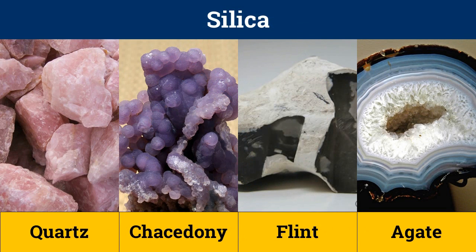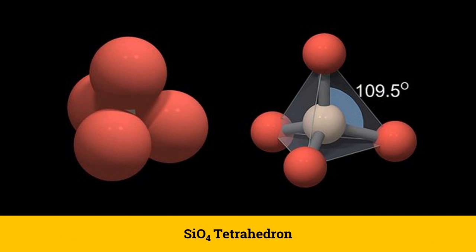Silicon does not occur in the free state, and silica or SiO2 is the only oxide of silicon which exists in nature. This silica can be found in the form of quartz, chalcedony, flint and agate, where quartz is the most common rock-forming mineral. All those large number of minerals containing silicon are known as silicate minerals. The fundamental building block of all silicate minerals is the SiO4 tetrahedron. Those oxygen atoms occupy positions at the corners of a tetrahedron, which maximizes the angle between all the atoms to 109.5 degrees.